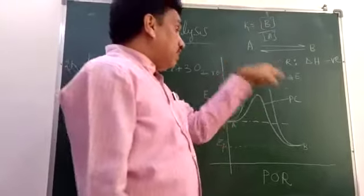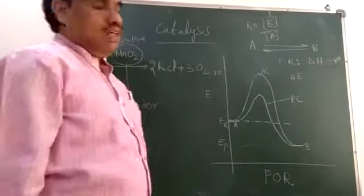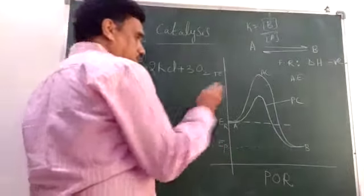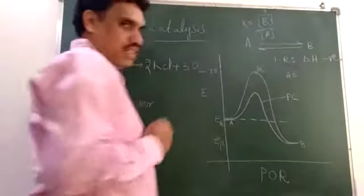In this graph, we have explained the manner in which a catalyst functions. When I say AC, it is the absence of catalyst.